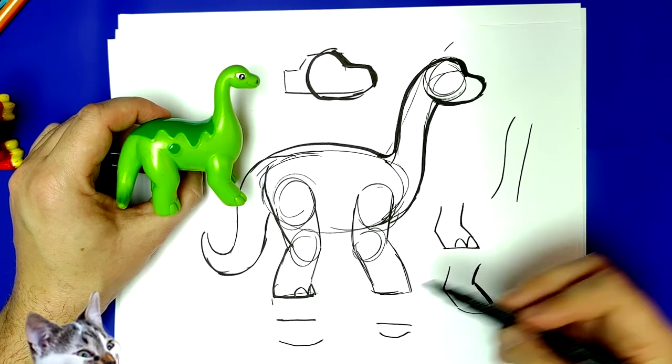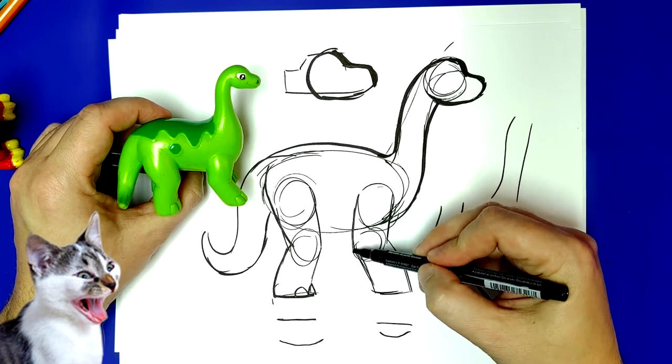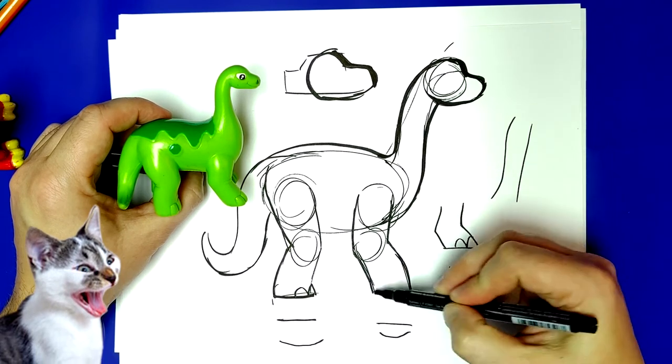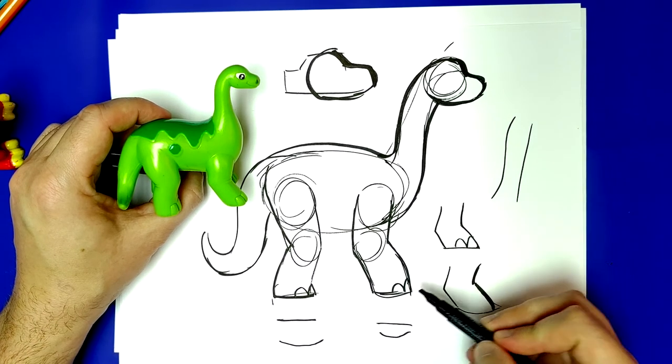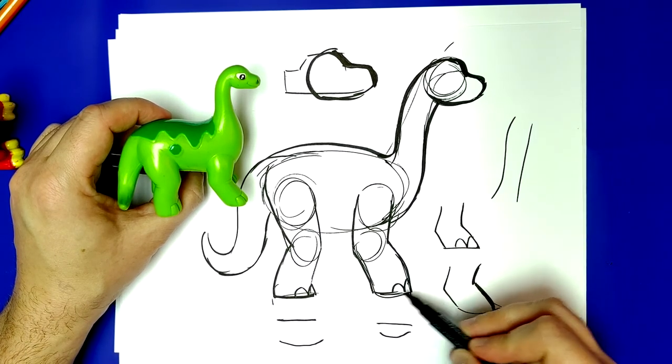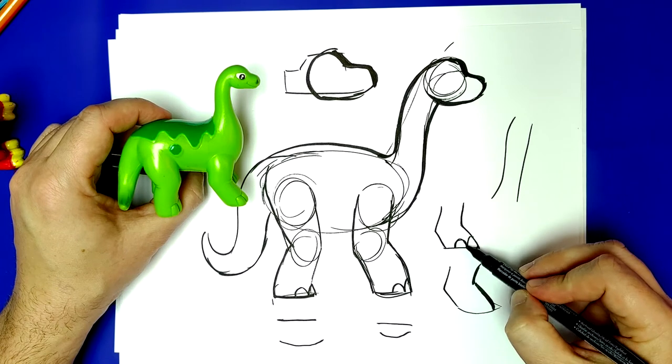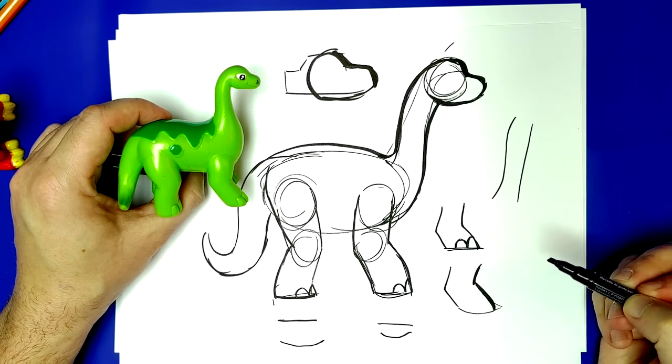And then I'll come up here to the front, make sure I have my lines, and I'll go curve, curve. Pay attention though, I didn't complete this curve, this is a half, okay? That's a hole, that's a half.